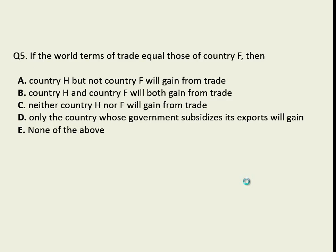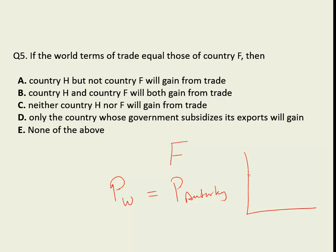This question asks: what if the terms of trade were the same for country F? What this is really asking is: if the world terms of trade — the price in the world market after this country opens up to trade — is equal to what it was before trading, i.e., the price under autarky, would this country gain from trade? If the production possibility frontier and indifference curve don't change, and there is no change in the price line, the country F would be at the same point on its indifference curve. So country H but not country F would gain from trade. Generally, world prices have to be different from the closed economy prices for there to be gains.